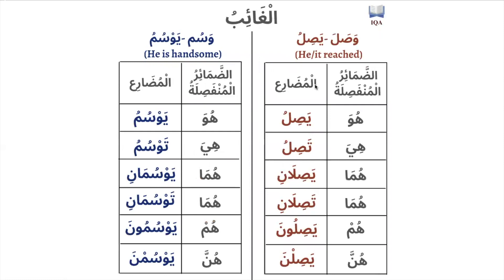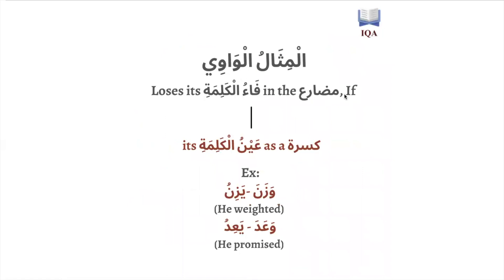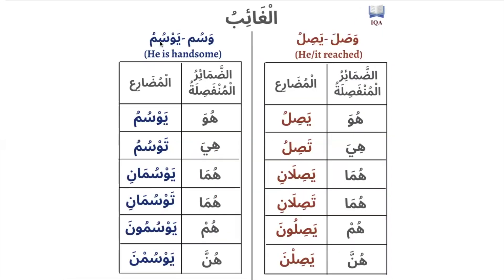To show how this looks: we have two verbs, wasuma and wasana. Wasuma means 'he is or became handsome' and wasana means 'he or it reached.' Both are mithal al-wawi — the weak letter is a waw in the fa-kalima. But wasana becomes yasilu in the mudara', where the ayn-kalima has a kasra, so the waw is dropped. Wasuma however becomes yawsumu, where the ayn-kalima has a damma, not a kasra, so the waw stays according to the rule.